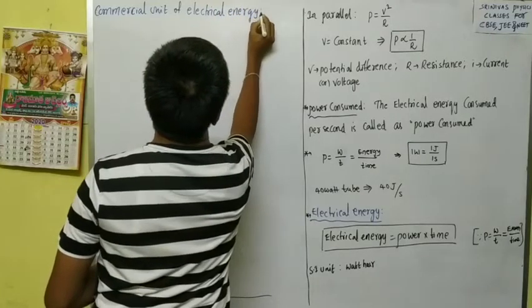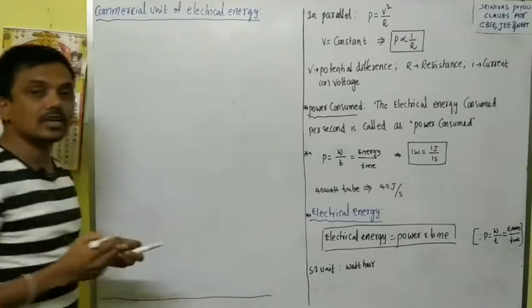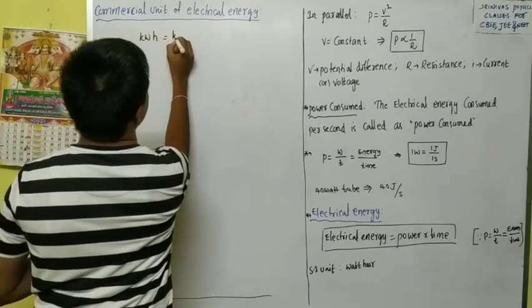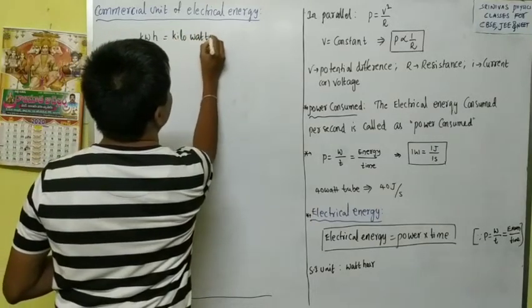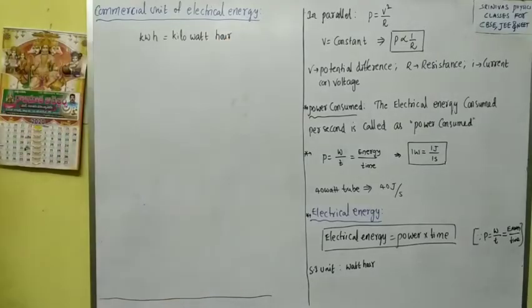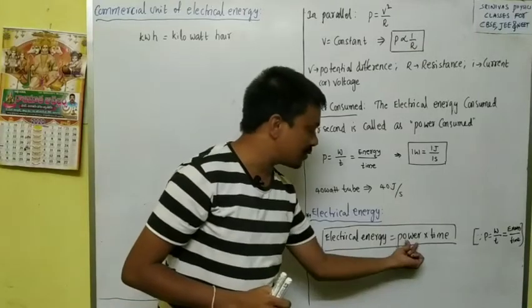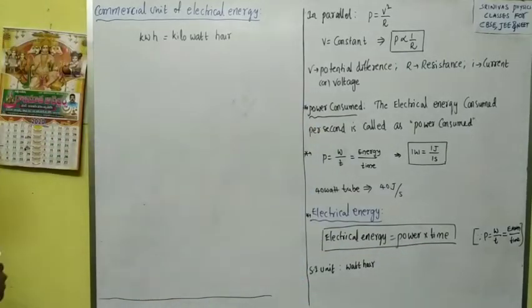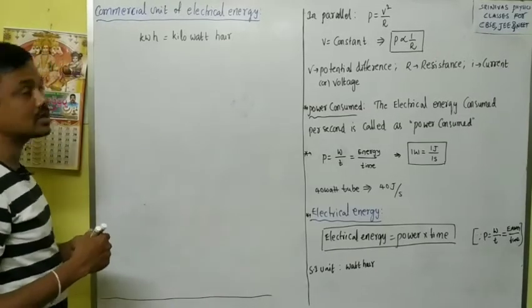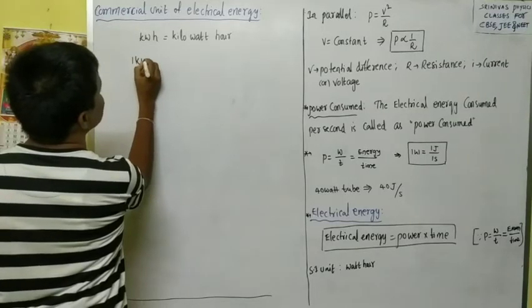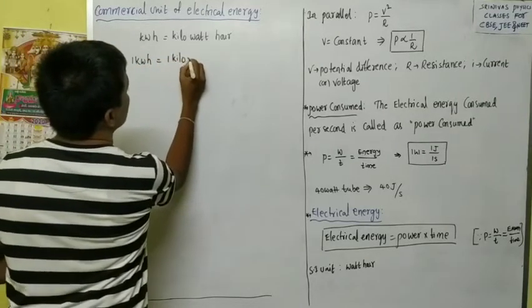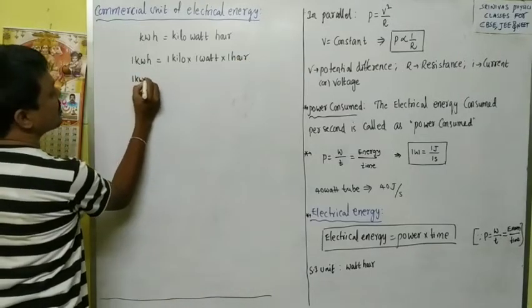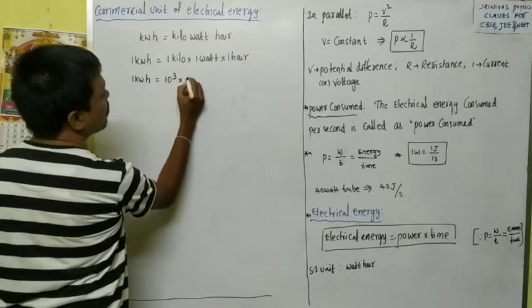The commercial unit of electrical energy is kilowatt hour (kWh). Electrical energy equals power into time. The unit: kilowatt into hour = kilowatt hour, which is the commercial unit of electrical energy. Electrical energy can also be expressed in joules. To convert one kilowatt hour into joules: one kilowatt hour equals one kilo — that is 1000 — into one watt, which is one joule per second.